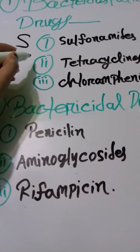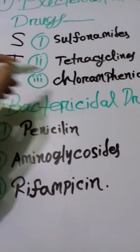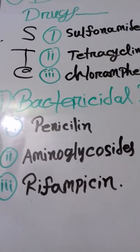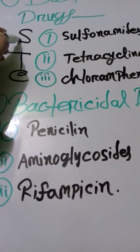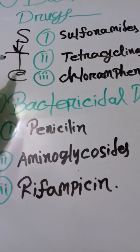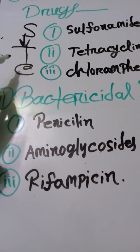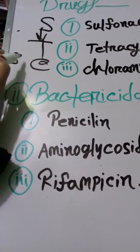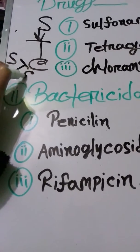Tetracyclines is T, chloramphenicol is C. So the mnemonic for bacteriostatic drugs is S, T, C.